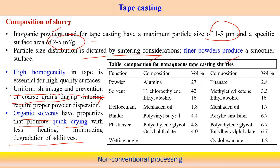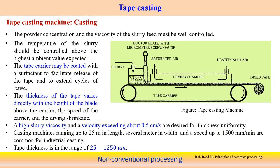For non-aqueous tape casting slurry, typical components include powder (e.g., alumina at ~27 vol% or titanate at ~2.8 vol%), solvent, deflocculant, binder, and plasticizer. The volume percentages and ratios are critical for optimum performance and are determined through extensive trials. Viscosity of the slurry feed must be well controlled, and powder concentration must be maintained to ensure consistent deposition.